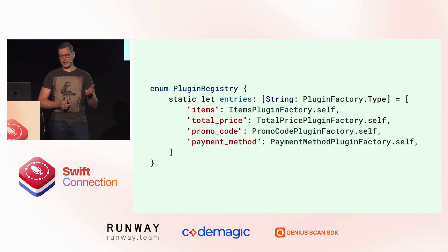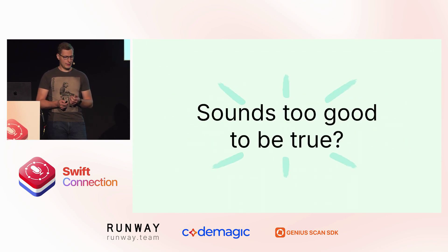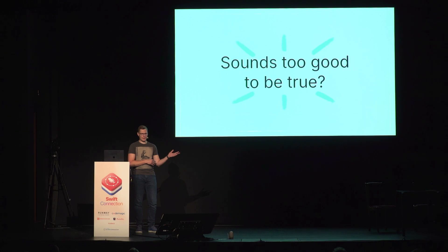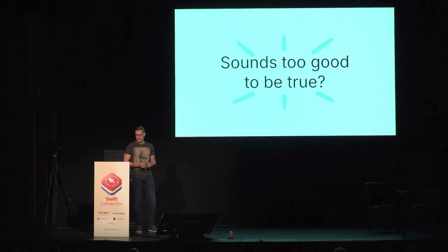So basically you have identifiers and the factory that builds from them. It sounds simple and almost too good to be true — you don't change anything that was before, you just add the entry and it magically appears. There is a catch to it, though.